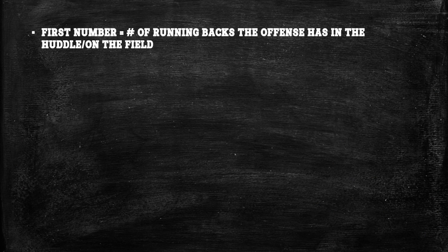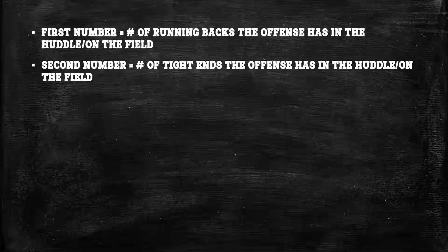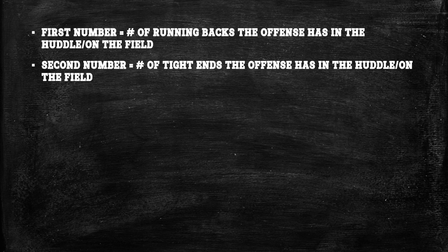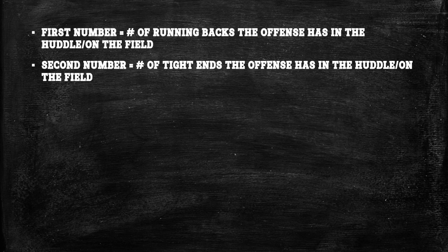What does it mean when someone says the offense is in 21 personnel? To answer that, you have to know what each of the numbers represent. The first number is always equal to the number of running backs on the field, and the second number is always equal to the number of tight ends on the field. Generally speaking, you're going to have a defensive coach up in the box with binoculars and the opposing team's roster, looking at the offensive huddle to quickly discern the personnel so they can get that information to the defensive coordinator, who makes his play call based on personnel and down and distance.